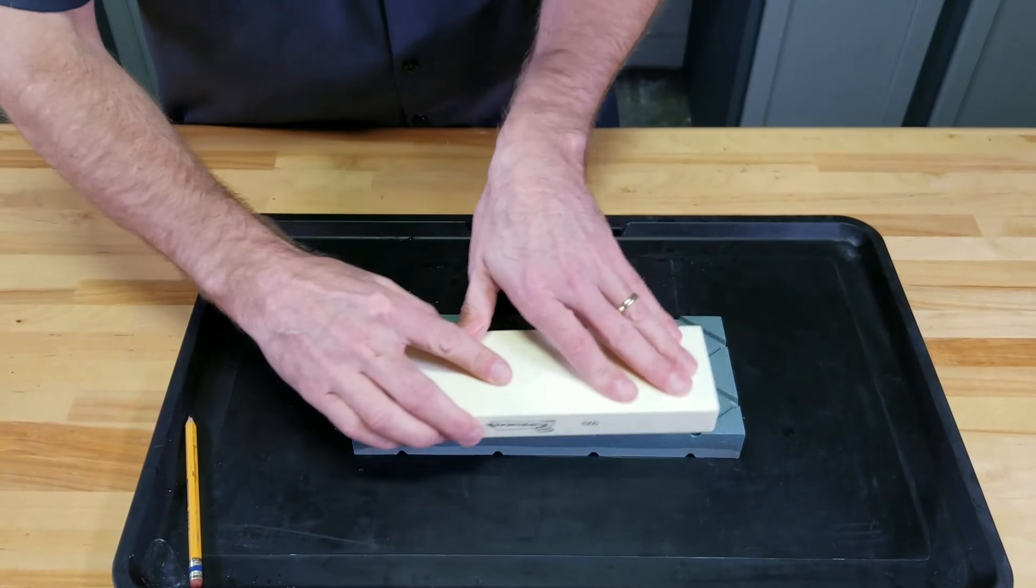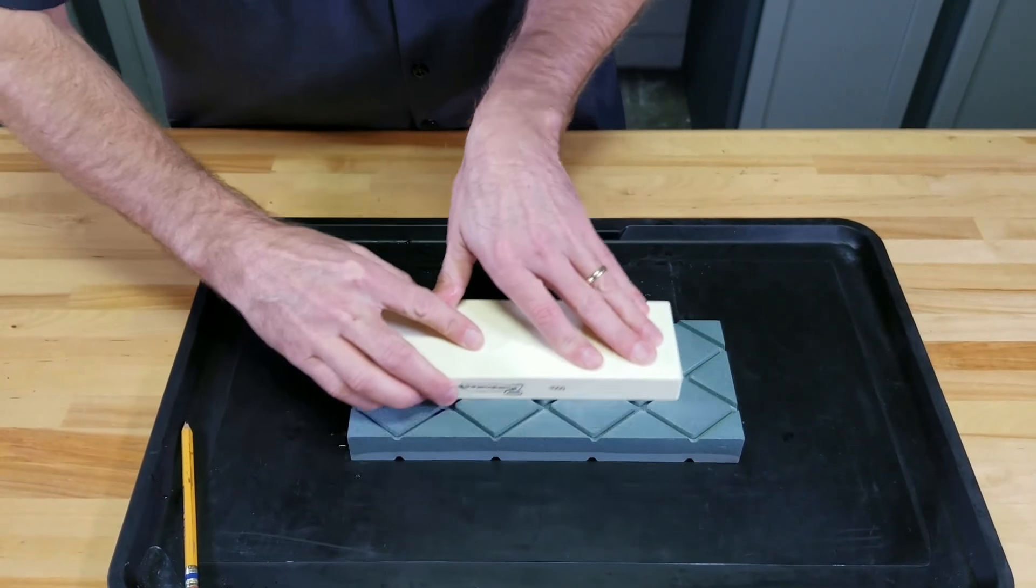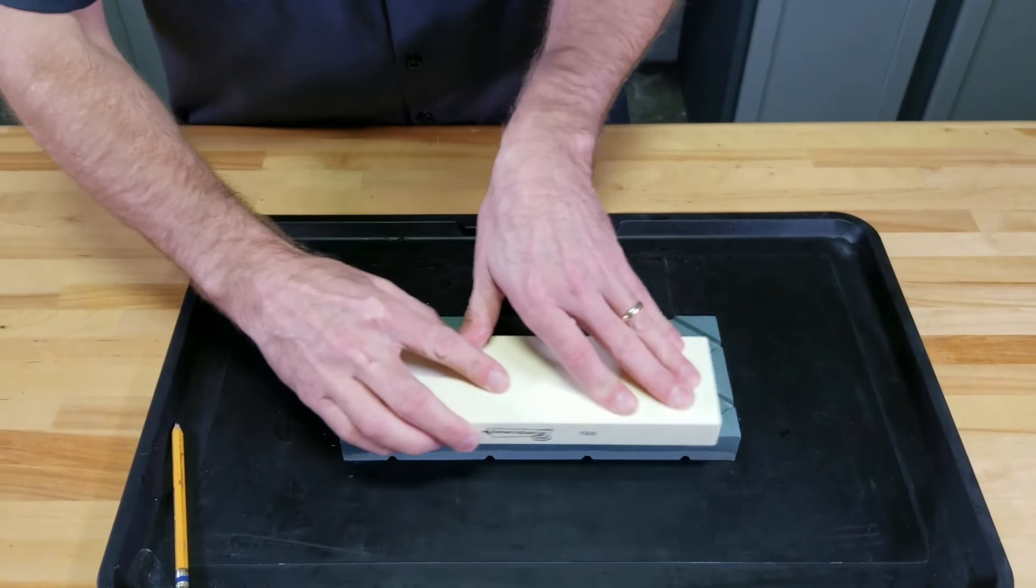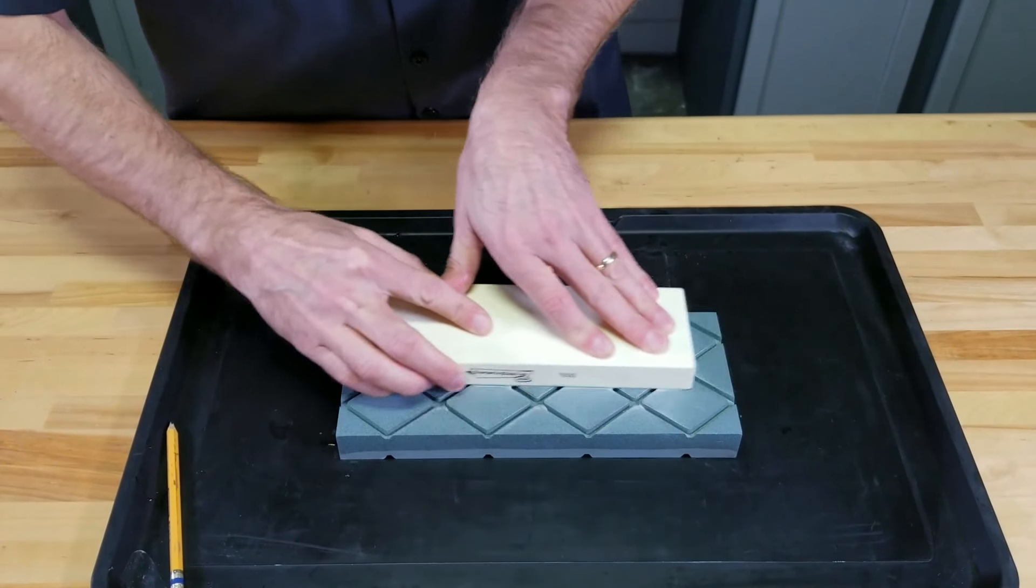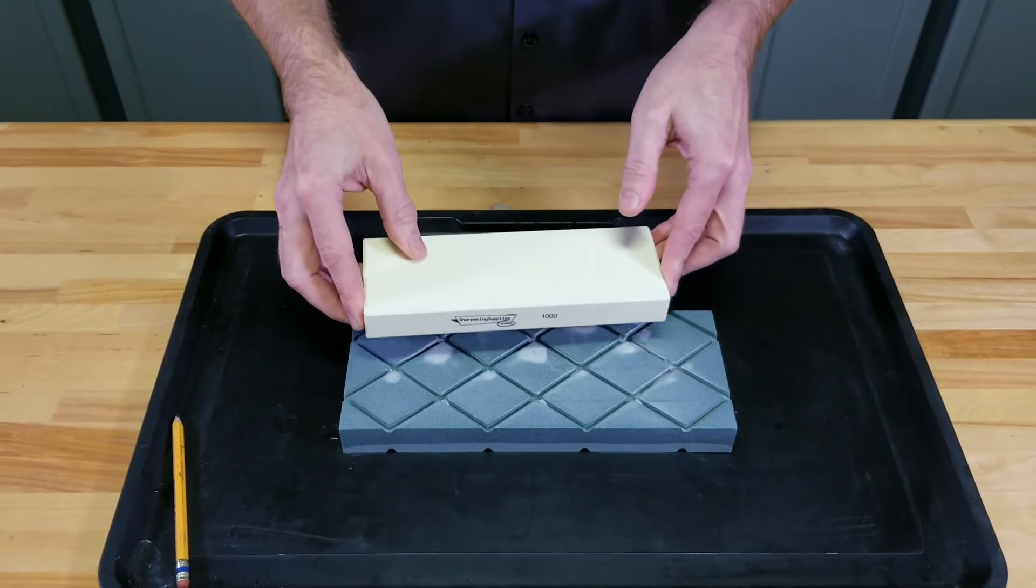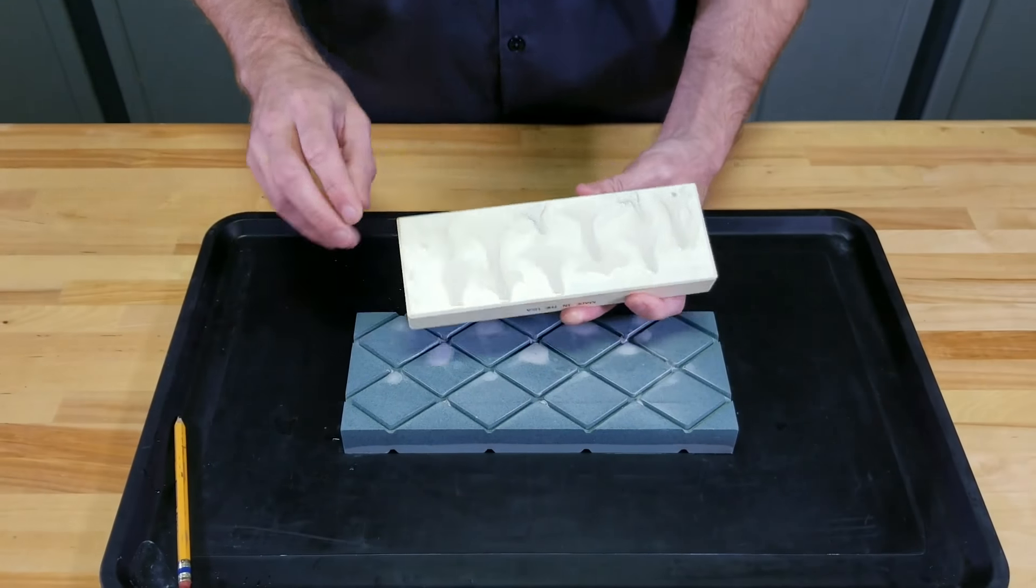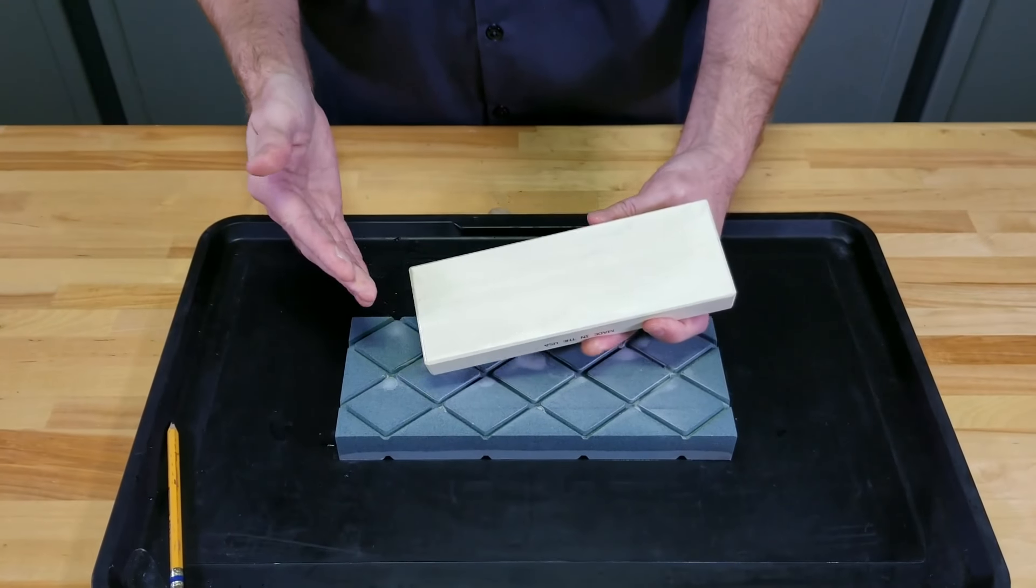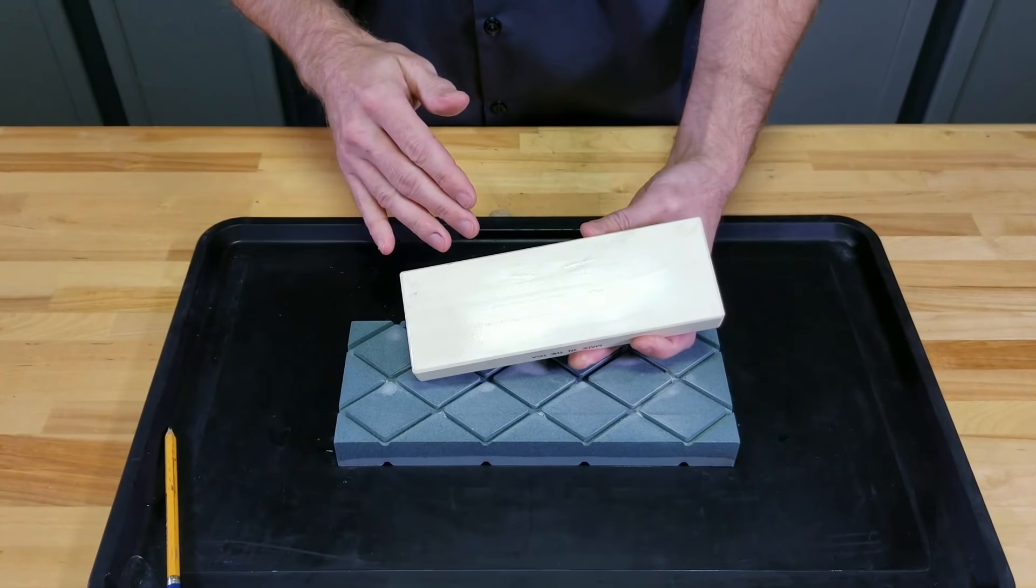Circular motions. Then every few strokes we're going to pause and check when the pencil lines are gone. Your stone has been flattened.